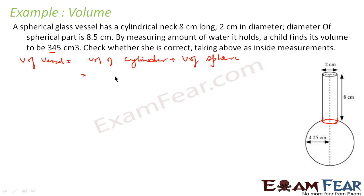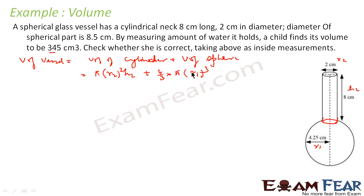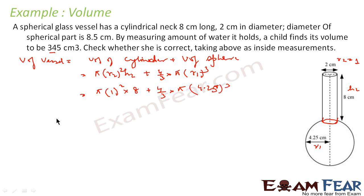Let the cylinder have radius r2 and height h2, and the sphere have radius r1. Volume of cylinder = π·r2²·h2, and volume of sphere = (4/3)·π·r1³. Substituting: π·1²·8 + (4/3)·π·(4.25)³. Solving this gives approximately 346.5 cm³.